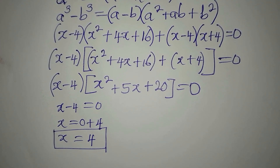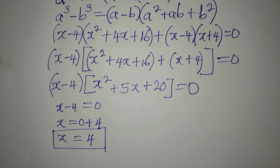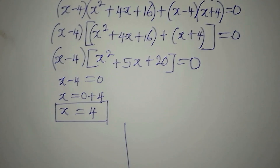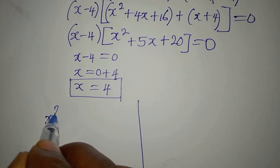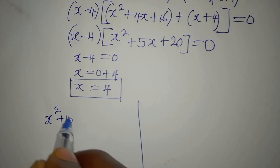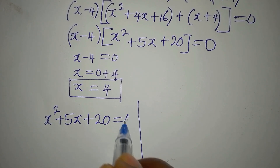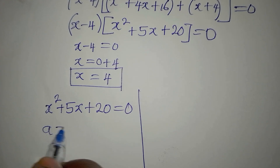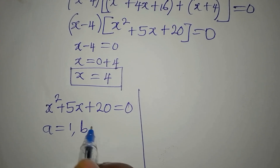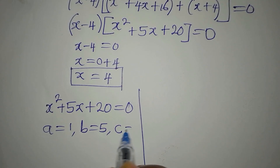To get the other solutions, we go back to the quadratic expression and equate it to zero: x squared plus 5x plus 20 equals zero. We'll use the quadratic formula. Here, a equals 1, b equals 5, and c equals 20.